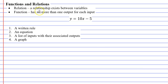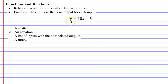Whenever you see a relationship existing between variables then you can call something a relation. Take for example the equation below — a relationship exists between the variables x and y. If I know what x is I can calculate y, and if I know what y is I can calculate x. A relationship exists here, so this equation can be called a relation.